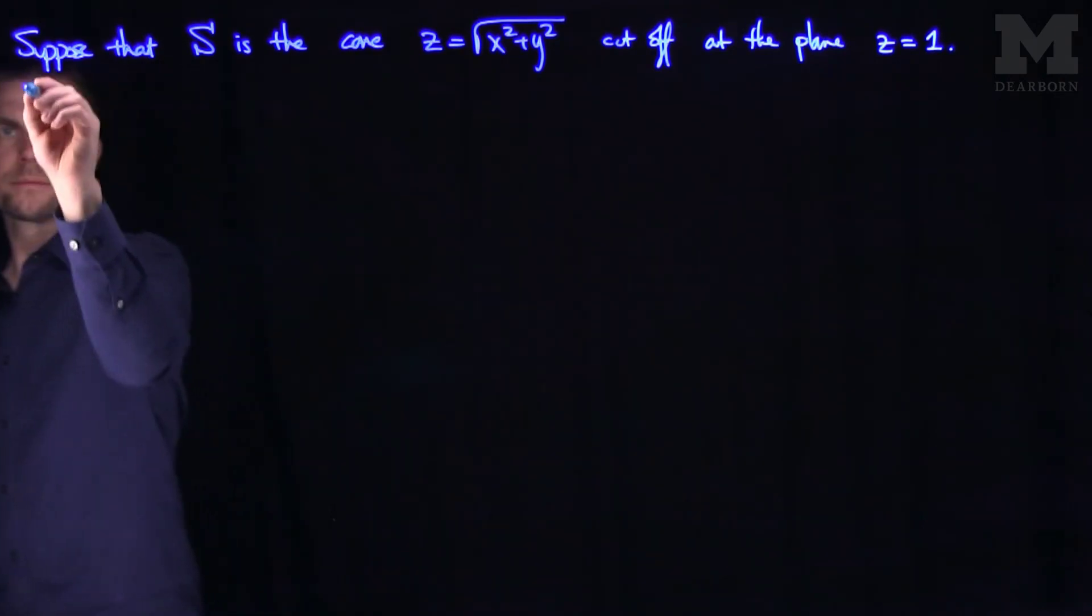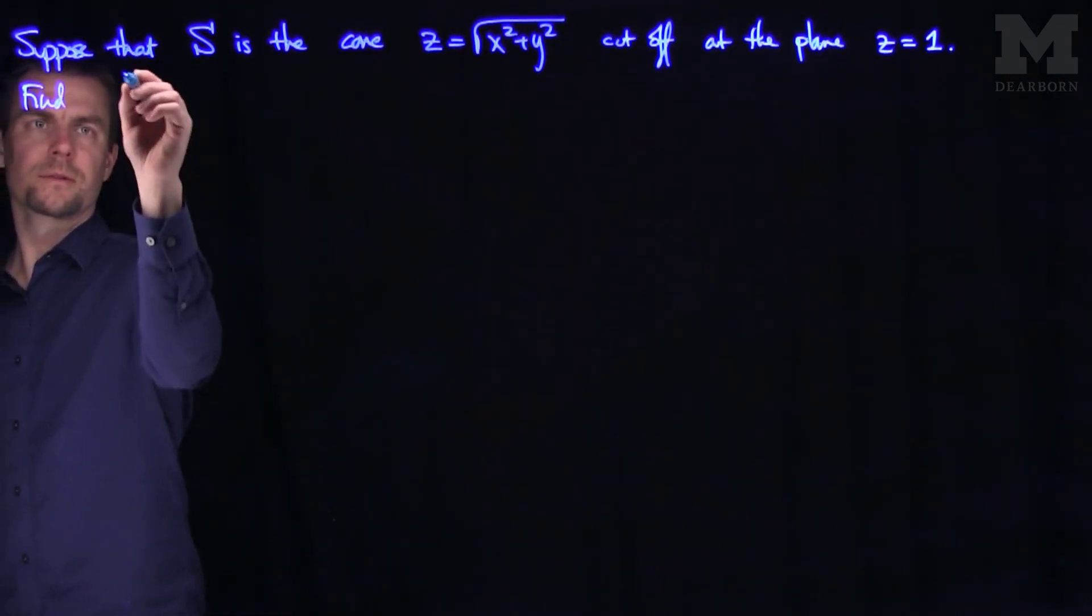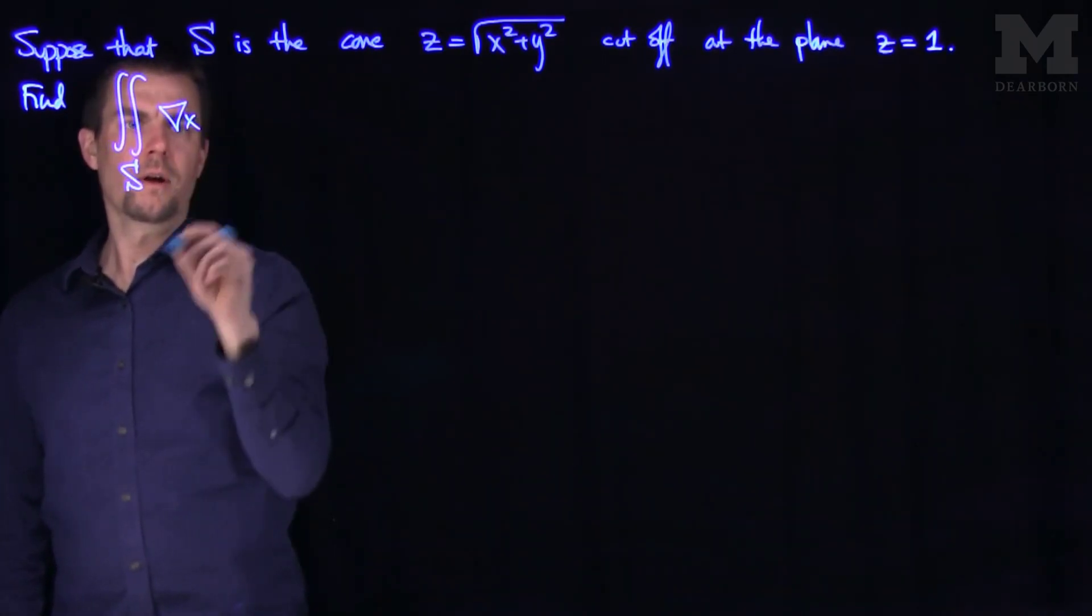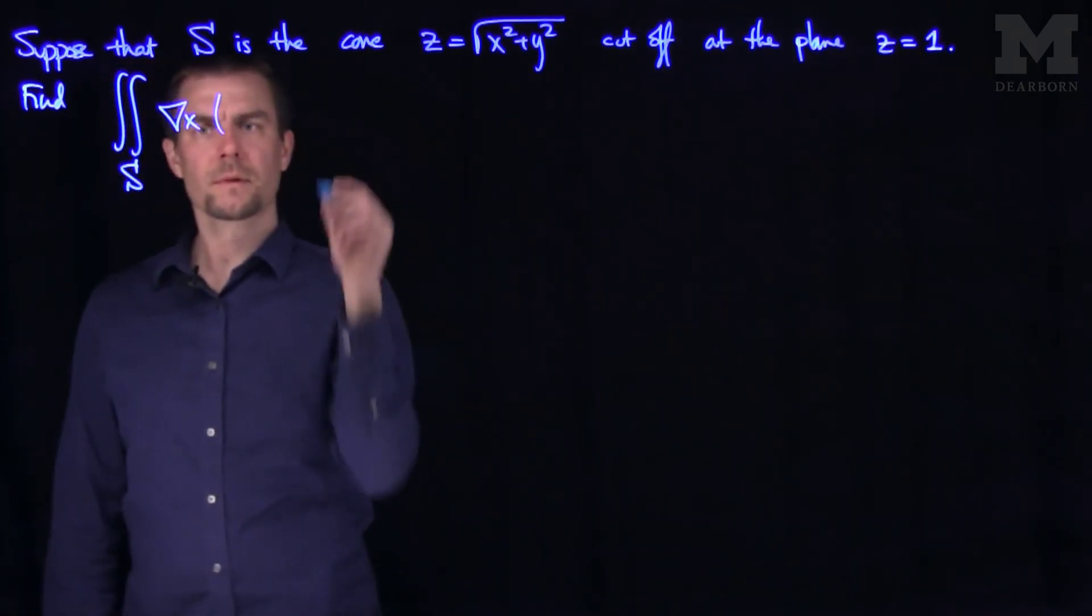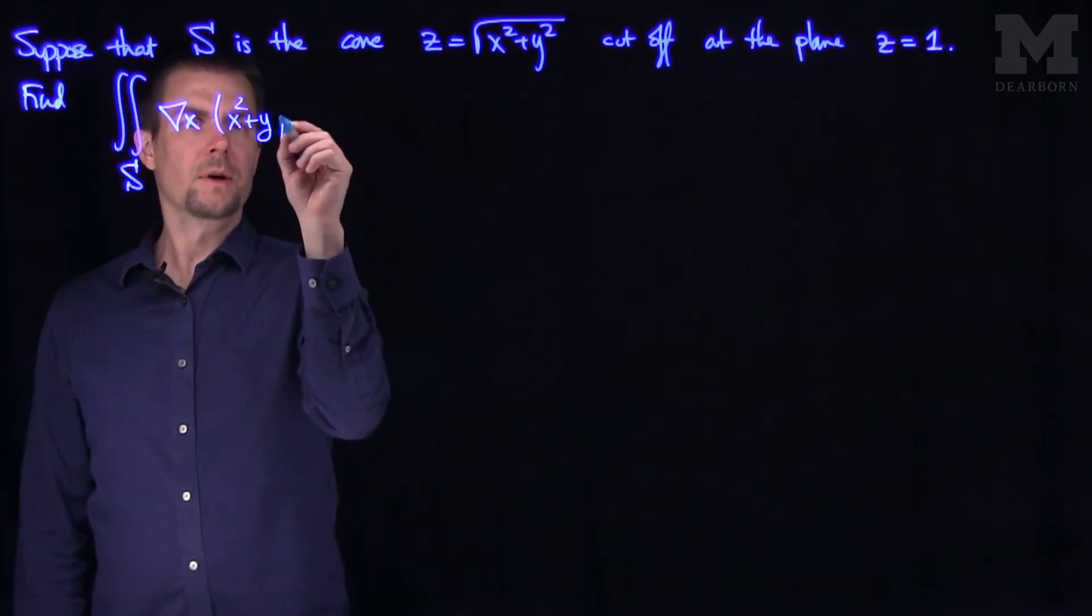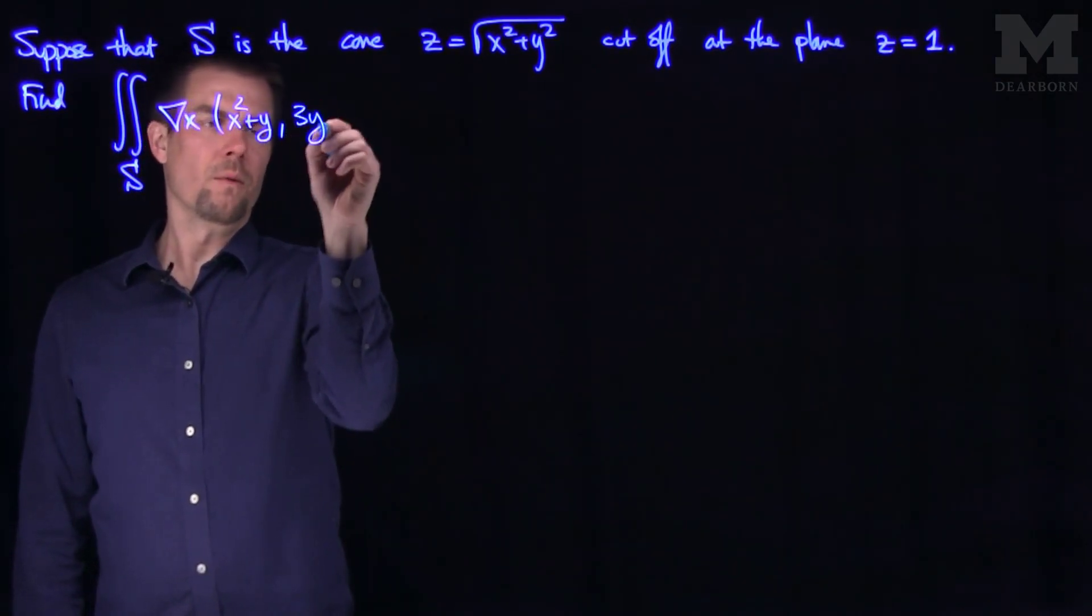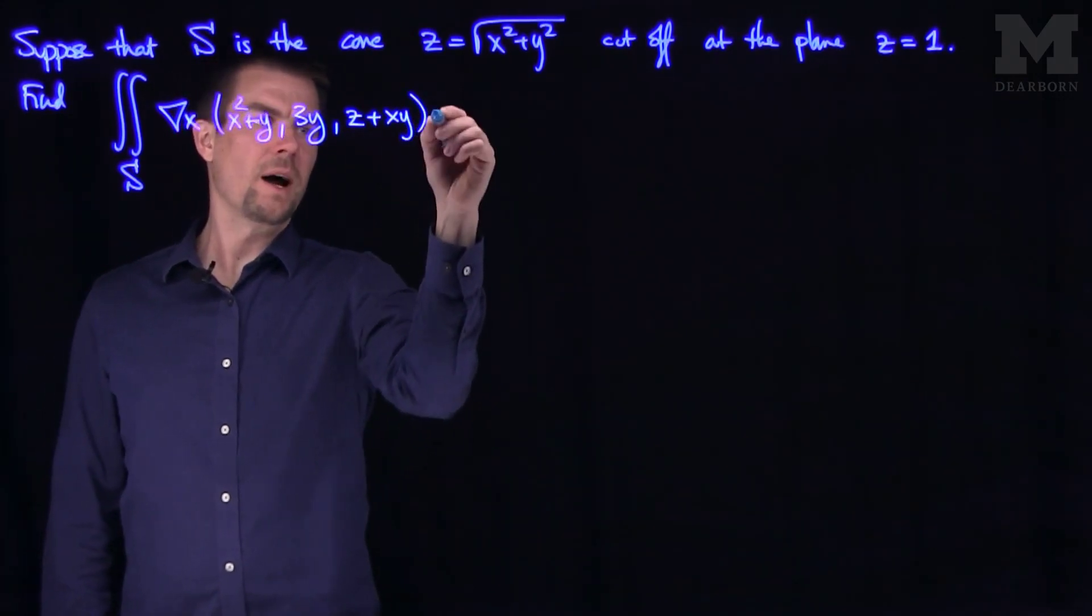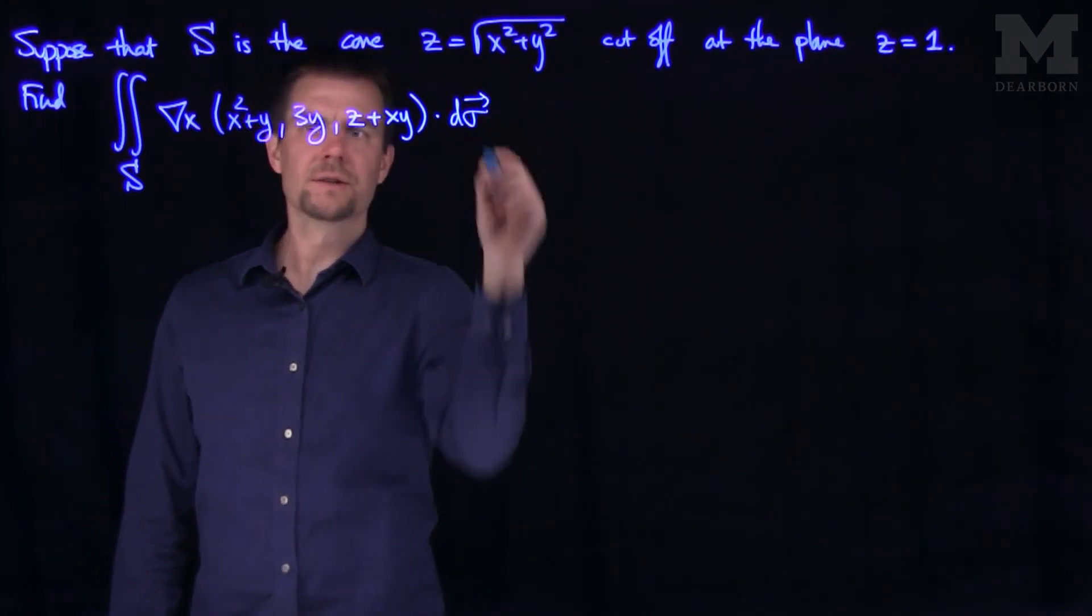Find the flux of the curl of the vector field x squared plus y comma 3y comma z plus xy dot d sigma.